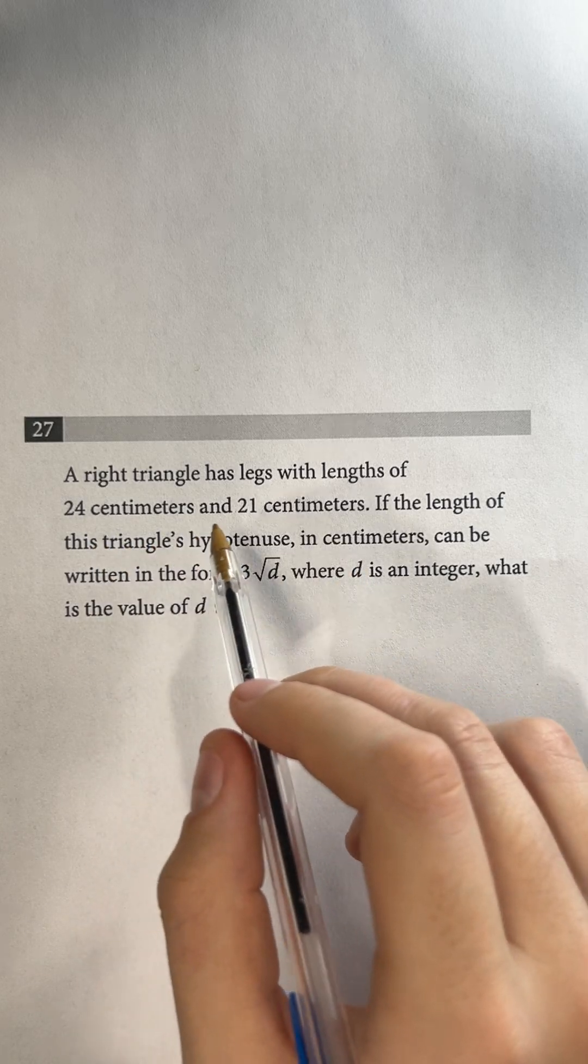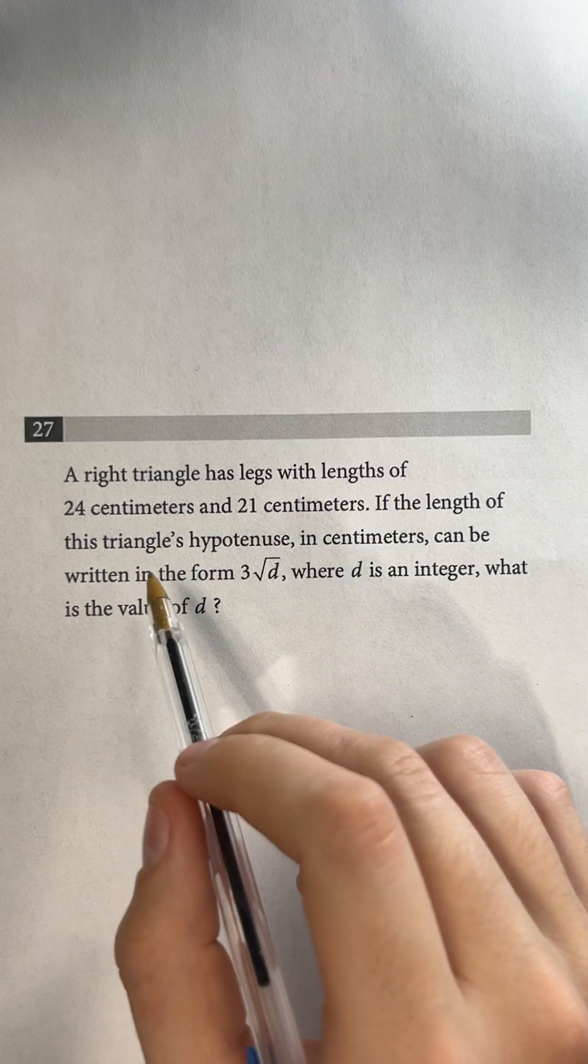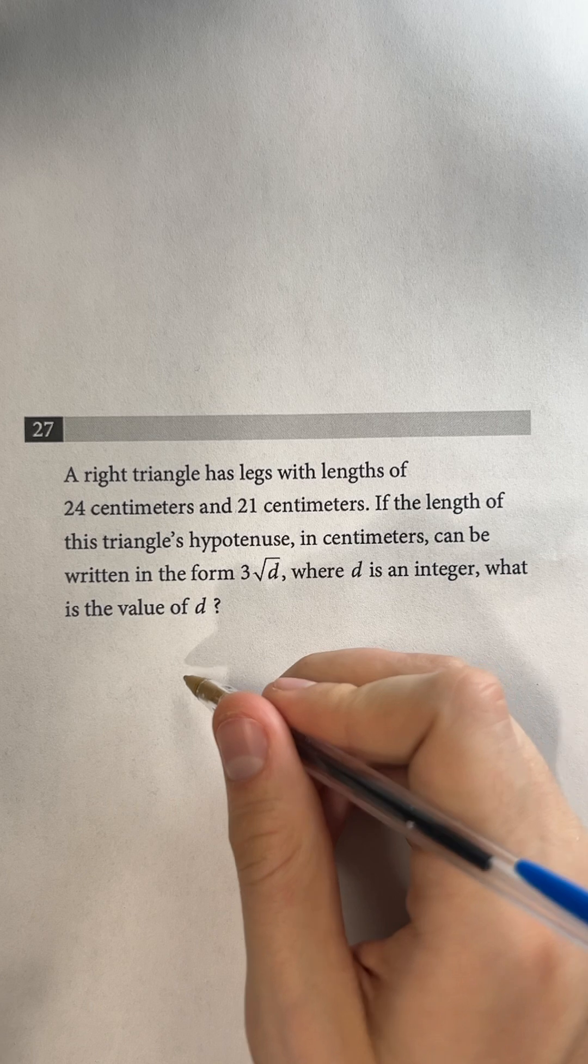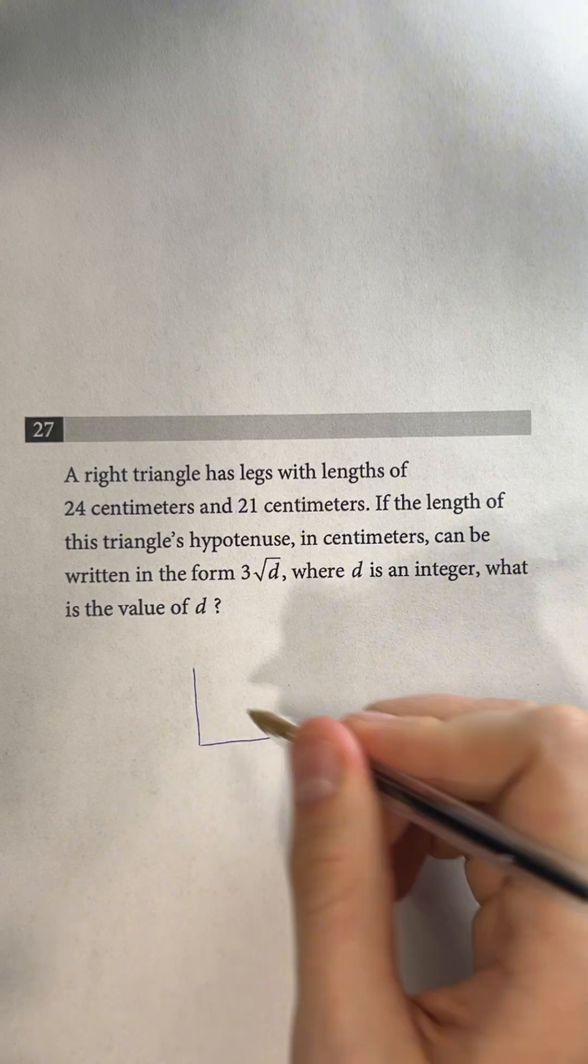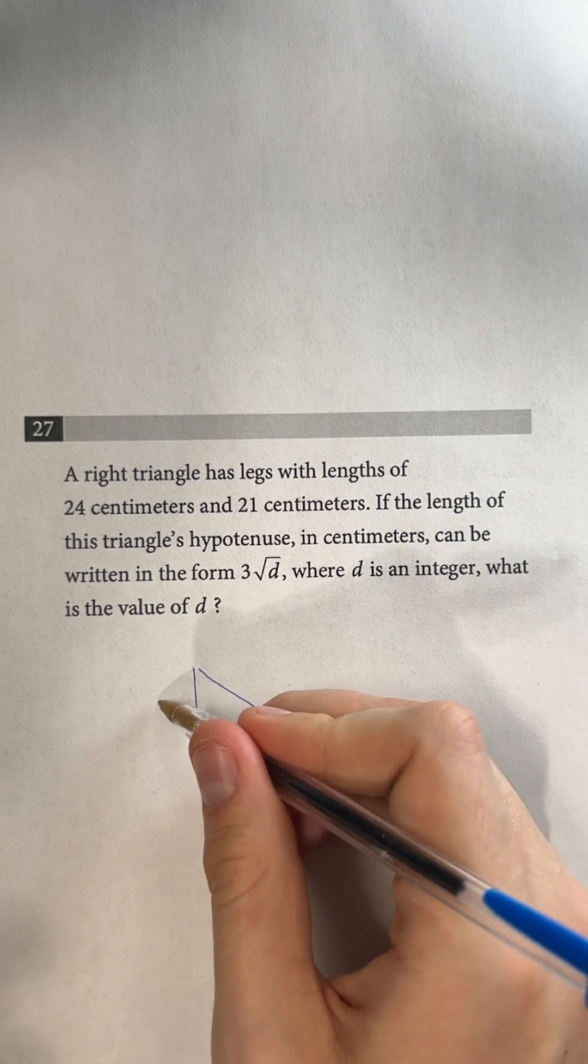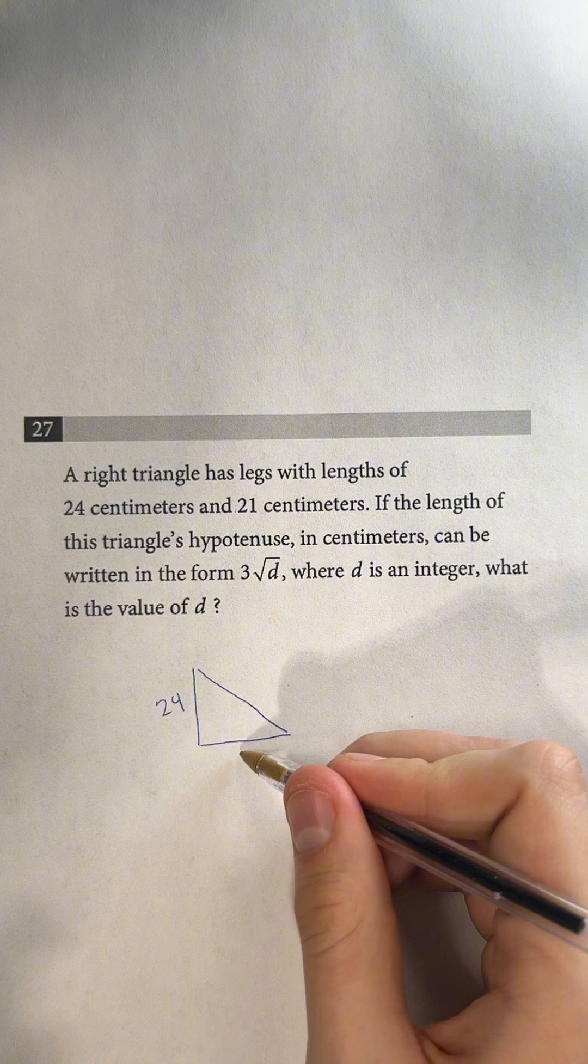Question 27. A right triangle has legs with lengths of 24 centimeters and 21 centimeters. So let's draw that really quick. So we have lengths of 24 and 21.